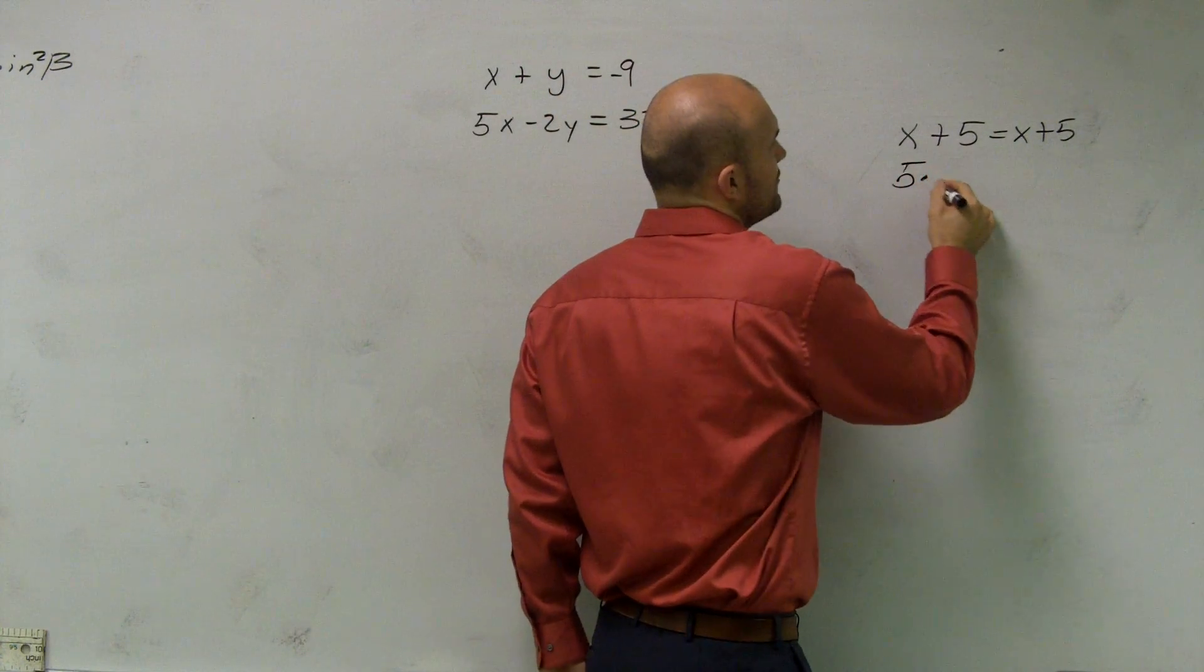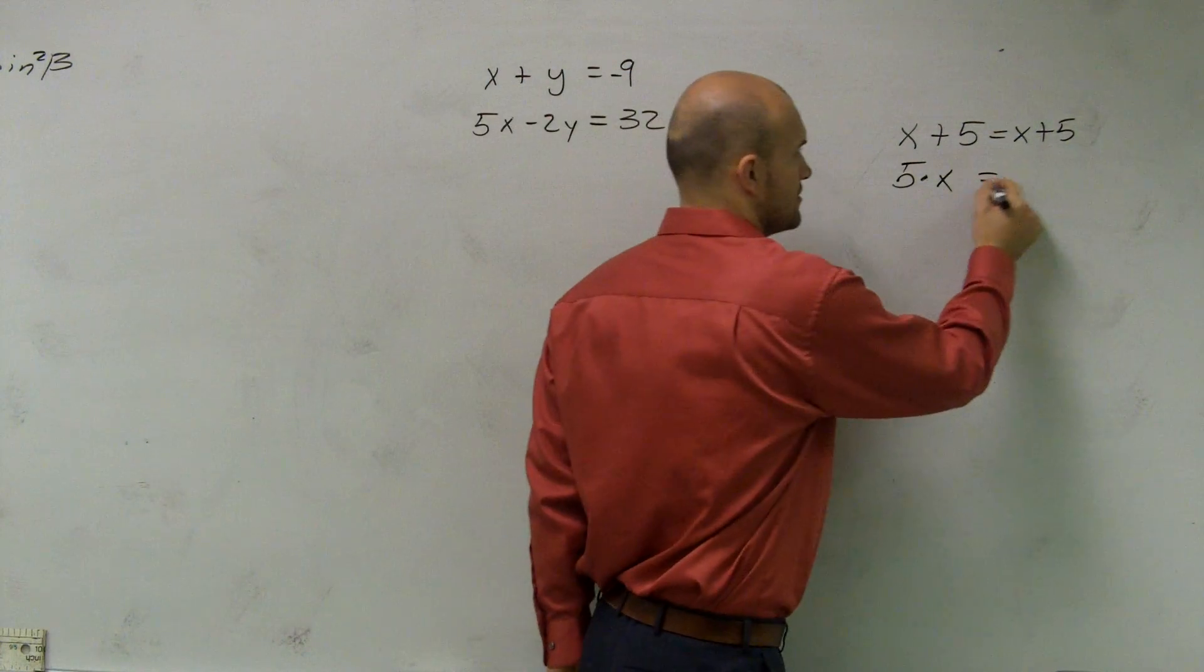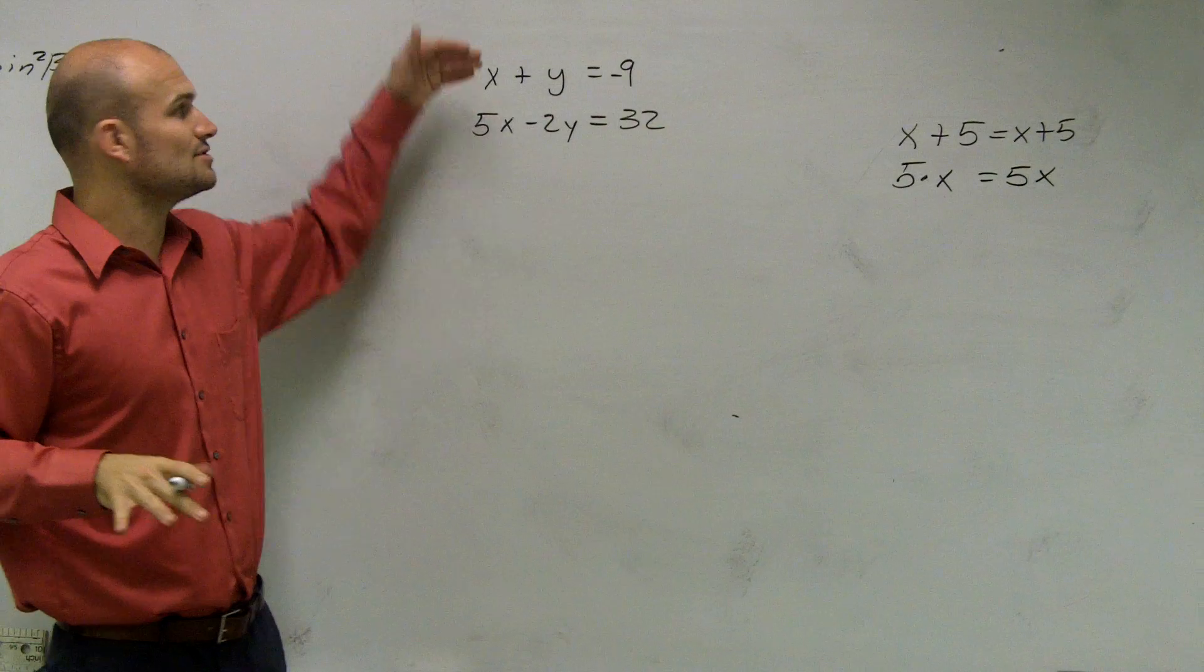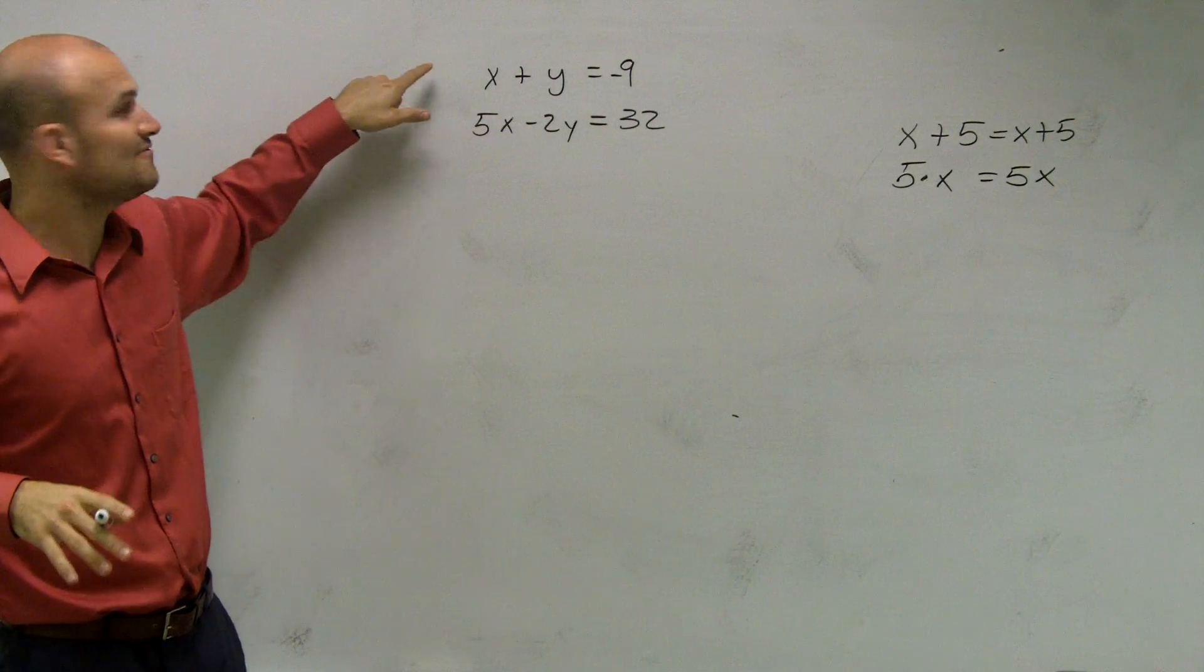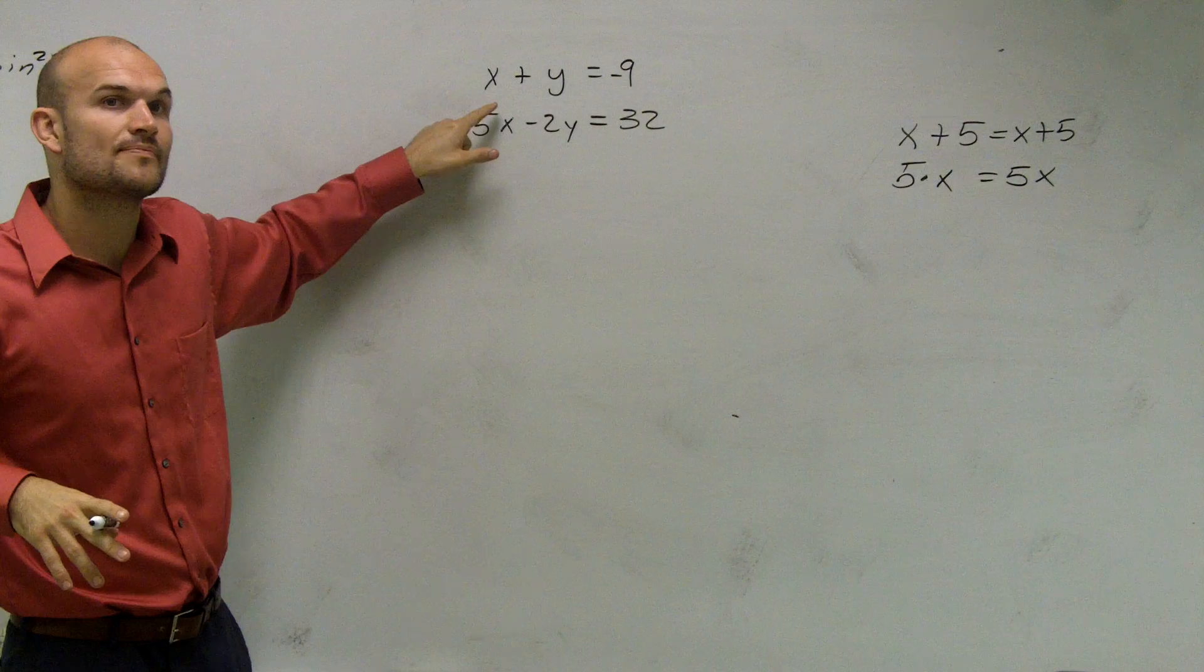However, when I do five times x, that simply just equals five x. So a big mistake is a lot of students say, oh, I'll just add five. No. Adding five does not make it five x. However, I can multiply by five.